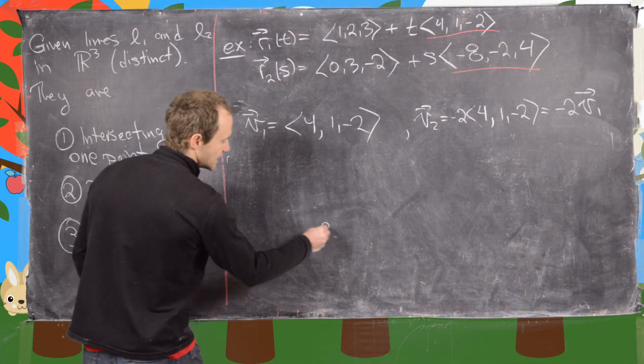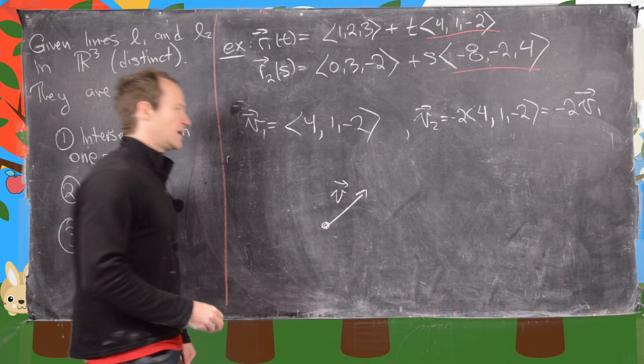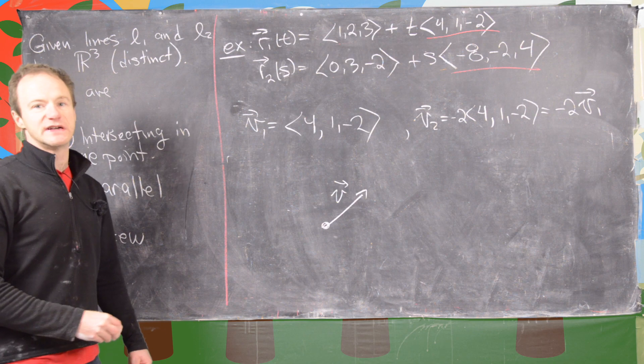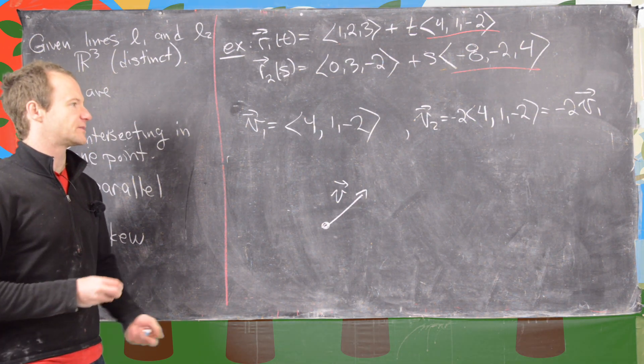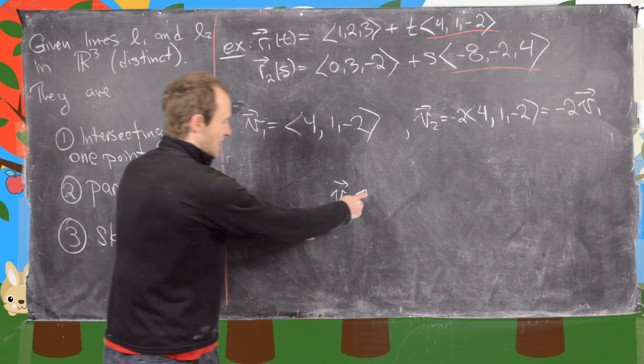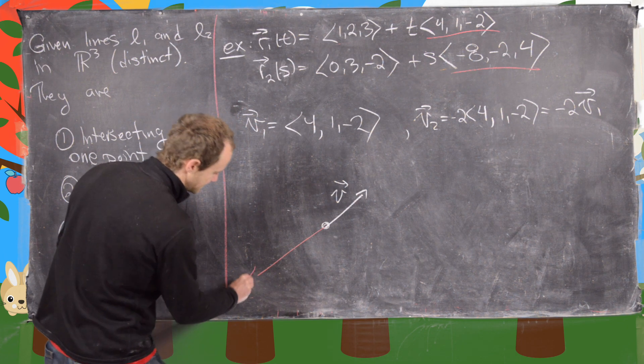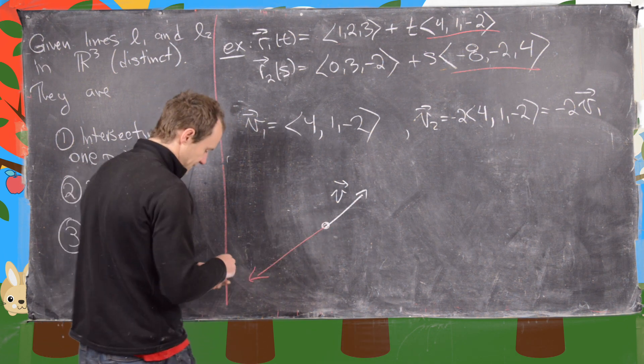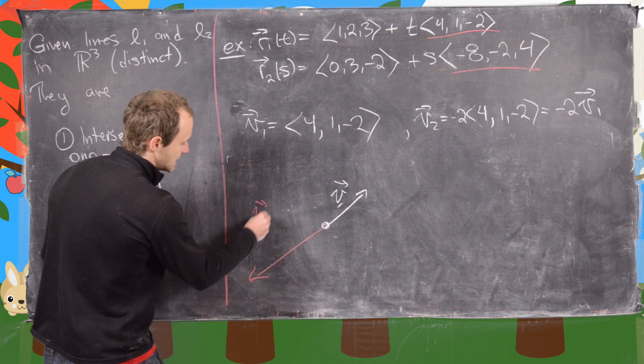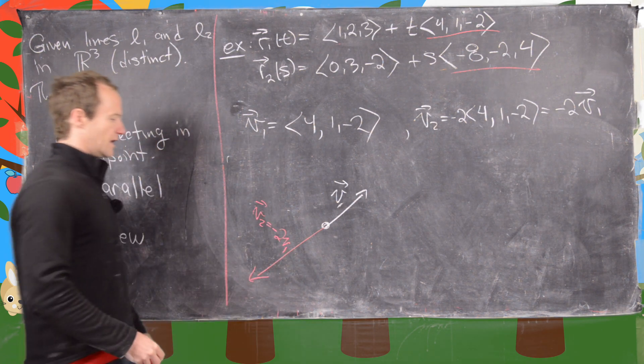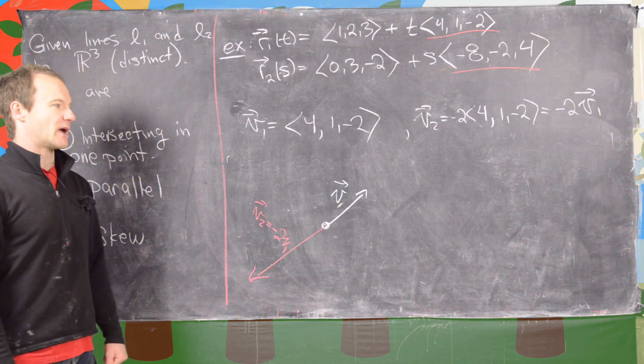So let's sketch what's going on here. This is V1. Notice V2 is -2 times V1, so it's going in the opposite direction with magnitude two units. If this is V1, then this is V2 which is -2 V1. So the vectors are parallel, which makes the lines parallel.